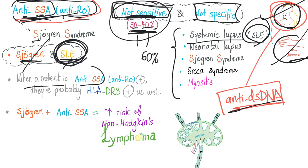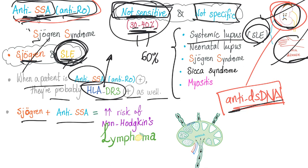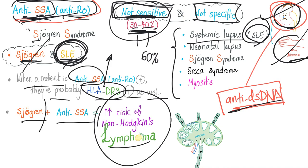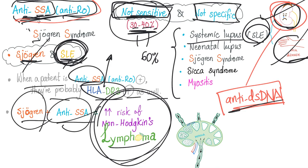When a patient is anti-SSA positive, they are probably HLA-DR3 positive as well — we'll talk about this in an upcoming video. Sjögren syndrome plus anti-SSA in the same patient means an increased risk of non-Hodgkin's lymphoma. It's very important that patients with Sjögren syndrome have an increased risk of non-Hodgkin's lymphoma, especially when anti-SSA, also known as anti-Rho, is positive.